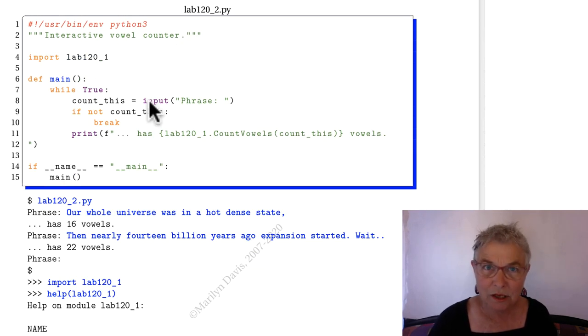Here I'm importing it. Lab 120 underscore one. I'm going forever asking for something from the user until we're not given something. I give a report of how many vowels are in the text that the user gave me.